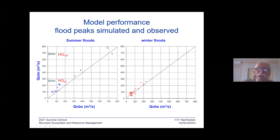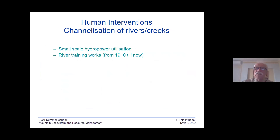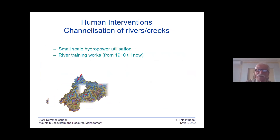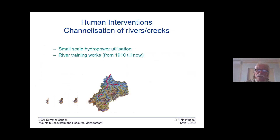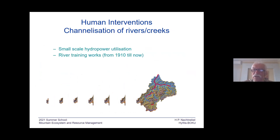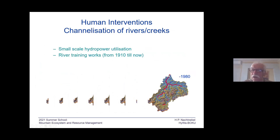You can compare observed and simulated results, and do that also for different historical conditions — for instance, for land cover from 1880 with only 25% of forest land. We also have small-scale hydropower utilization, but these are small schemes of a few hundred kilowatt hours, so they don't have a severe impact. Looking at river training works, the red lines indicate development from 1910 onwards up to recent conditions, showing a lot of engineering works which have modified the major tributaries in the basin.